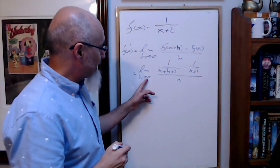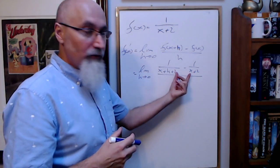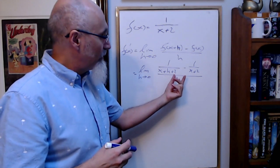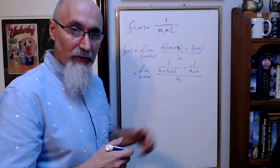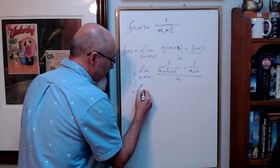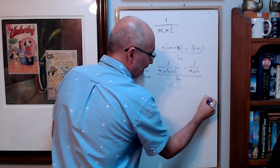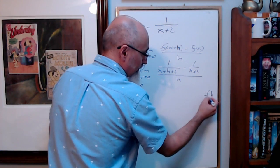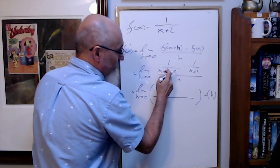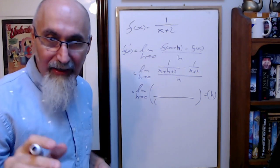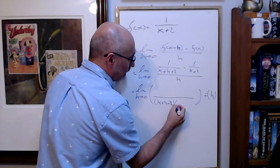We still can't set h equal to zero because we get a division by zero. So we crunch — add these two fractions. How do we add these two fractions? We've got to find a common denominator. Common denominator is x plus h plus 2, times x plus 2. So I'm going to write: limit as h approaches zero, divided by h, and work this part out.